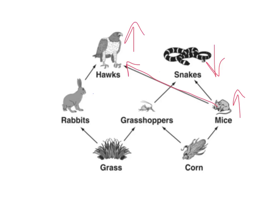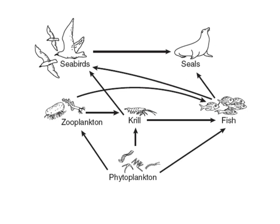Looking at a different food web, you may be asked cause-type questions like what would cause the seal population to decrease. A decrease in fish population or a decrease in seabirds could reduce food availability for seals, causing their population to decline. There's a wide variety of application-type questions you could be asked with food webs, and we'll be working through those kinds of questions in class.